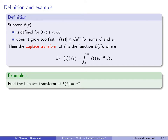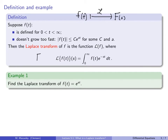The Laplace transform of f is defined as follows. Think of it as a function of functions: you input f(t), apply the Laplace transform, and output some function capital F of a variable s. We think of t as time and s as frequency. The output F(s) is defined as the integral from 0 to infinity of f(t) times e^(−st) dt, and we frequently call this capital F of s.